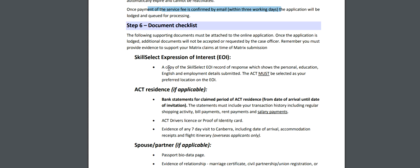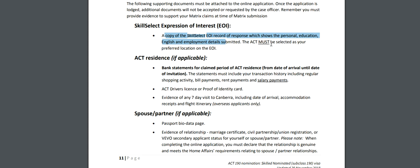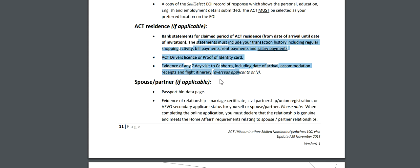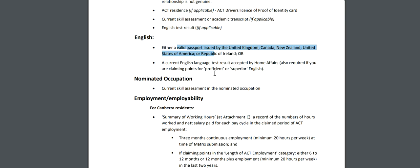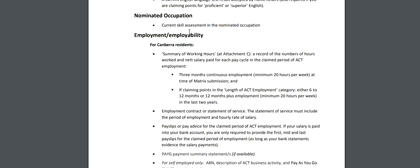For the document checklist: you need a copy of your SkillSelect EOI record showing personal, education, and English information - ACT must be selected as your preferred location on your EOI. For ACT residence, spouse, and English, you provide evidence as applicable. For English you need to provide your language test result if claiming proficient or superior points; otherwise you still need to show minimum IELTS 6, or a valid passport issued by UK, Canada, New Zealand, United States of America, or Republic of Ireland, which automatically gives you competent English level. You also need to provide your skills assessment.